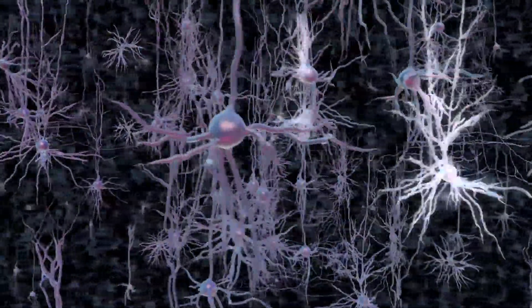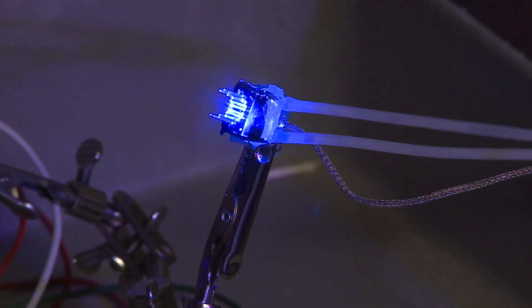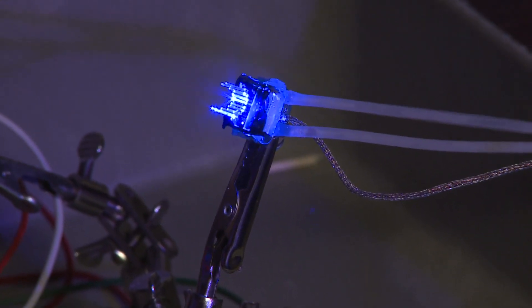And so what we need are technologies for controlling entire neural circuits. One of the things that we're doing now is to try and actually build three-dimensional light delivery devices that can beam light into many parts of a neural circuit.